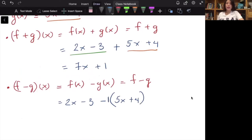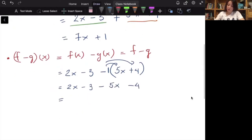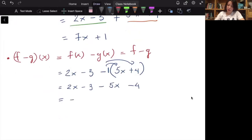It's actually a negative 1, but we don't write it there. It's an invisible negative 1 there, so you have to distribute the negative 1 into each of these terms of the function. So I have 2x minus 3, minus 5x minus 4, which is equal to negative 3x minus 7.